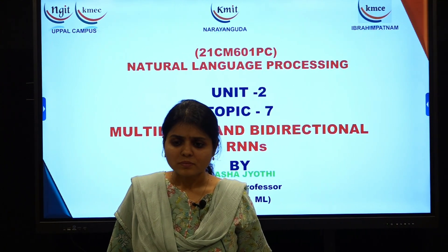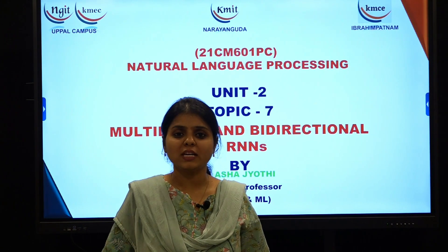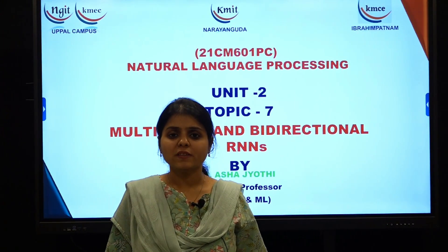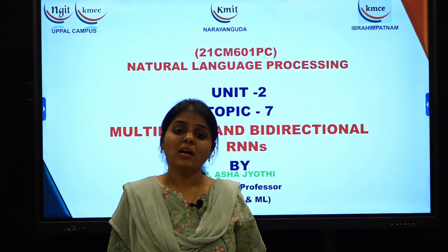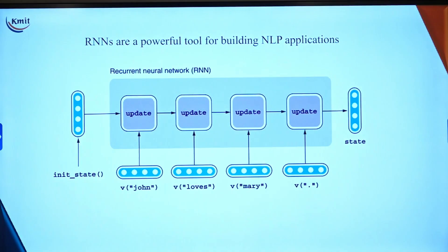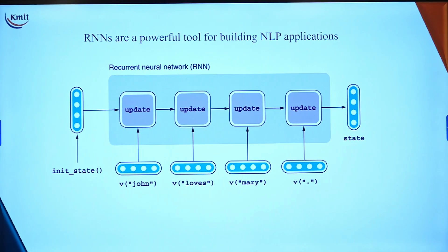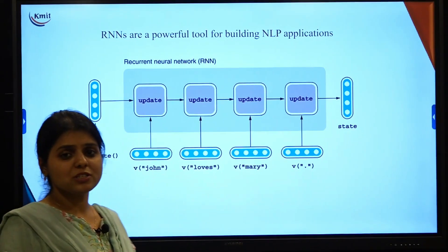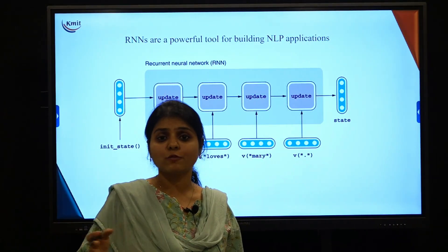Hello all. In the last few sessions we were discussing about how we process sequential data — that is text — using RNNs. Today in this session I would like to discuss two more important different architectures of RNN, which are multi-layer and bi-directional RNNs. RNNs are powerful tools for building NLP applications because most NLP applications deal with processing natural language, that is text data, and text data is processed in a sequential order.